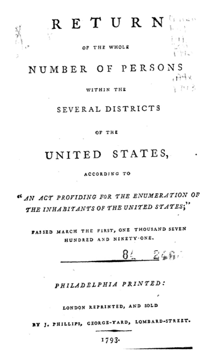The 1850 Census saw a dramatic shift in the way information about residents was collected. For the first time, free persons were listed individually instead of by head of household. There were two questionnaires: one for free inhabitants and one for slaves. The question on the free inhabitants' schedule about color was a column left blank if a person was white, marked 'B' if black, and marked 'M' if mulatto. Slaves were listed by owner, classified by gender and age, with 'B' for black and 'M' for mulatto.